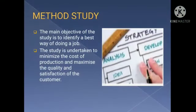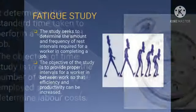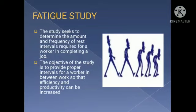The next technique is Method Study. The main objective of this study is to identify the best way of doing a job. The study is undertaken to minimize the cost of production and maximize the quality and satisfaction of customers. The next technique is Time Study. It determines the standard time taken to perform a well-defined job. The objective of time study is to determine the number of workers to be employed and to determine the labor cost.